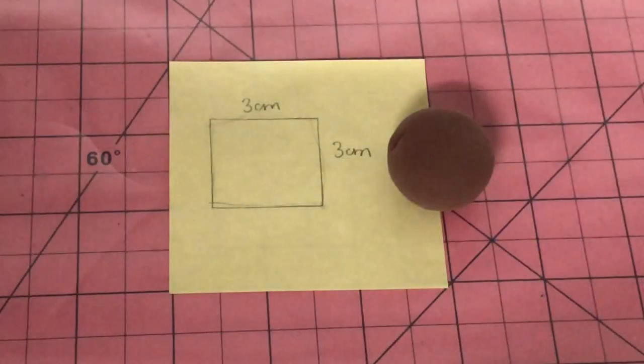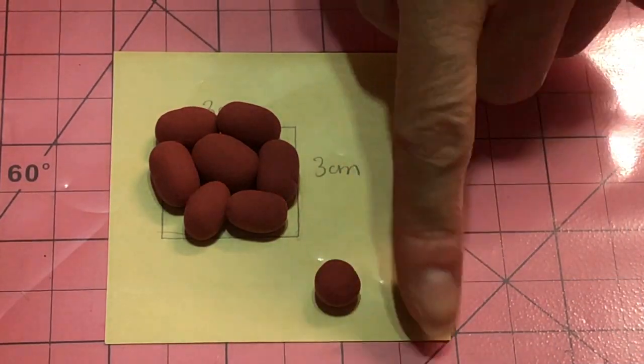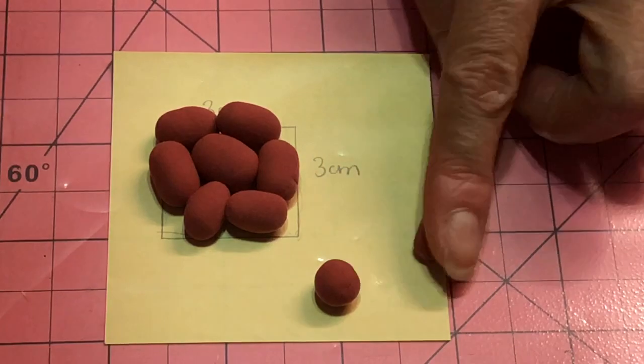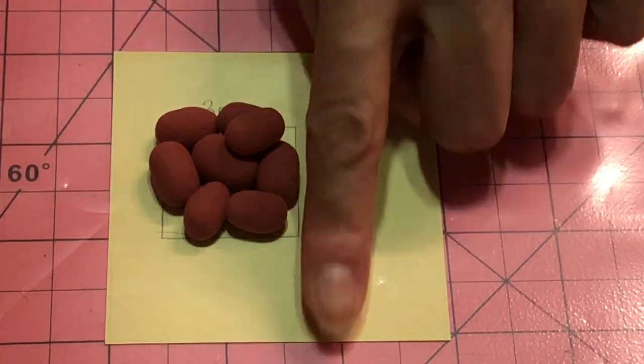Moving on to the sesame chicken. Take a ball of brown clay and make large cylinders about the size of those yummy gourmet jelly beans. Arrange them to make a block 3 by 3 centimeters.